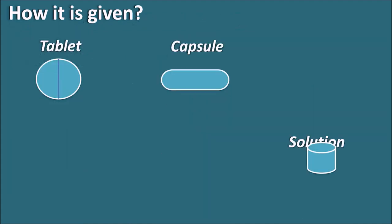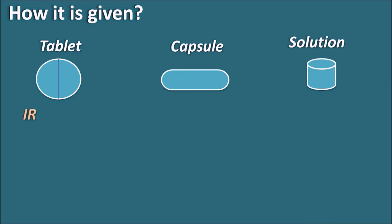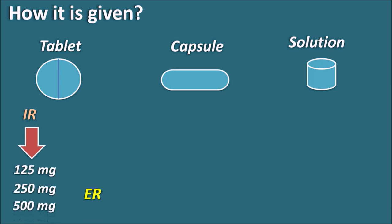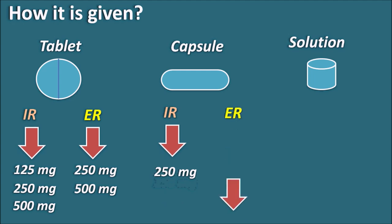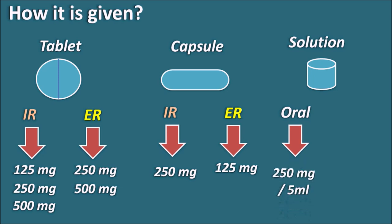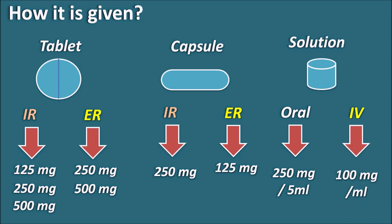Valproic acid can be given as a tablet, capsule, or solution. As an immediate-release tablet: 125 mg, 250 mg, and 500 mg. As an extended-release tablet: 250 mg and 500 mg. As an immediate-release capsule: 250 mg; extended-release capsule: 125 mg. The oral solution is 250 mg per 5 ml, and the parenteral IV solution is 100 mg per ml.